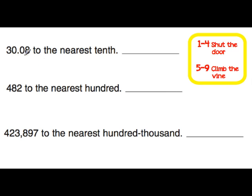30.08 to the nearest tenth. The tenths place is right after the decimal. Looking at the number to the right of the tenths place, we are going to climb the vine. So we have 30 and 1 tenth.